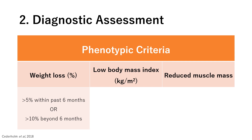A patient meets the unintentional weight loss criterion for malnutrition if they have lost more than 5% of their body weight within the past six months, or more than 10% beyond six months. This weight loss is unrelated to starting weight and can be used in patients with high BMIs — the key factor is that the weight must have been lost without the intention to do so.